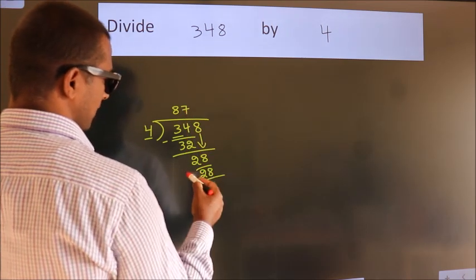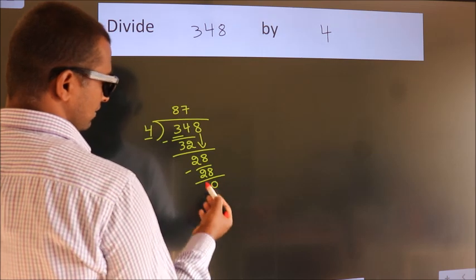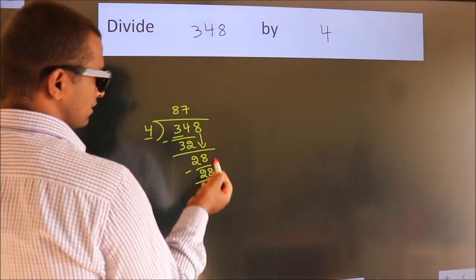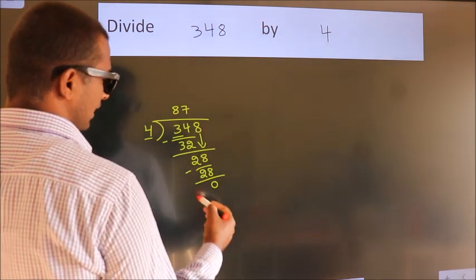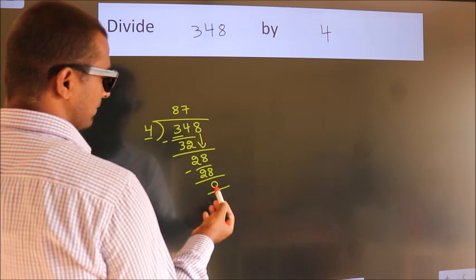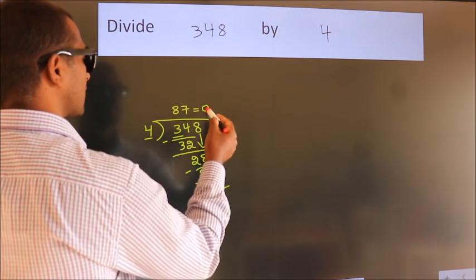Now we subtract. We get 0. After this, no more numbers to bring down. And we got remainder 0. So this is our quotient.